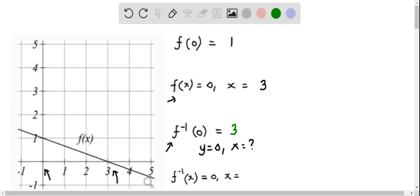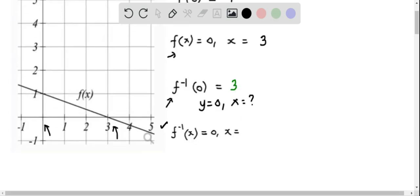Let's do the last one. Here we have to determine x when f inverse of x equals 0. So this is basically asking the question, when x equals 0, what is y? So let's find this.